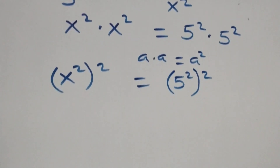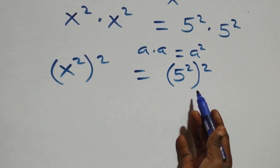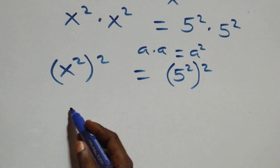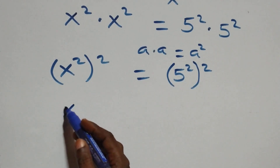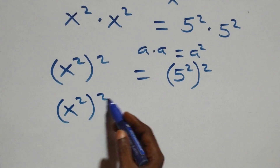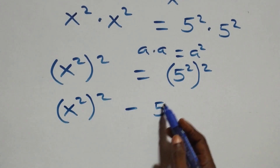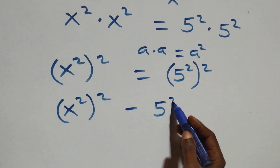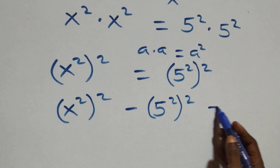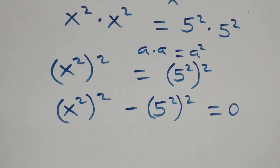The next step here, we take 5 squared all squared from the right-hand side to the left-hand side, and this becomes x squared all squared, then minus 5 squared all squared, then equals to 0 on this side.